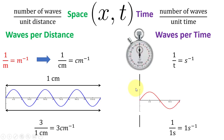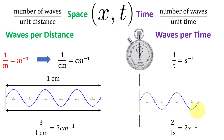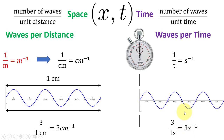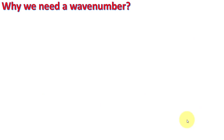For time frequency, consider a fixed point and count how many waves pass in 1 second. If 1 wave passes per second, the frequency is 1 Hz or 1 cycle per second. If 2 waves pass, the frequency is 2 Hz, and for 3 waves, it is 3 per second.